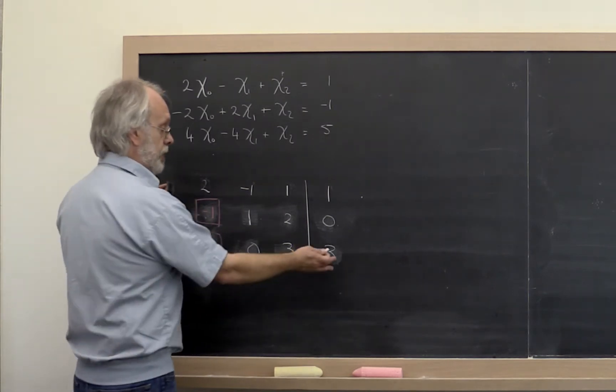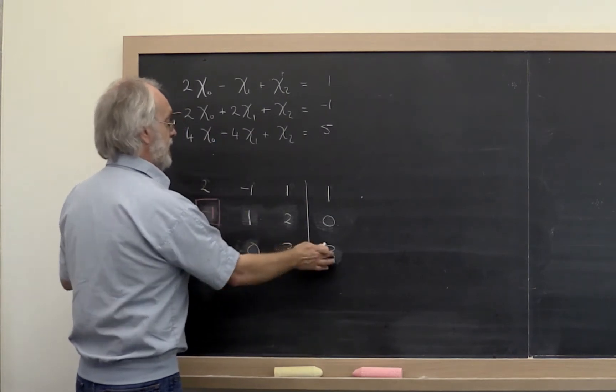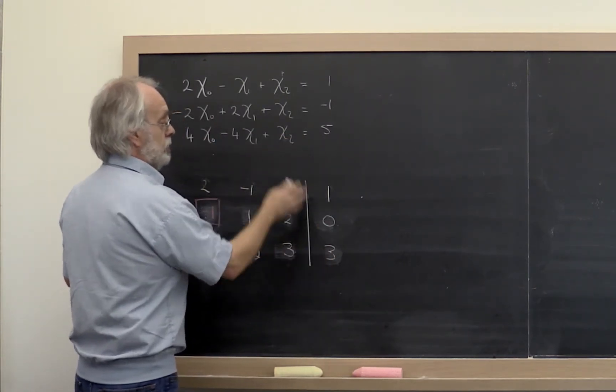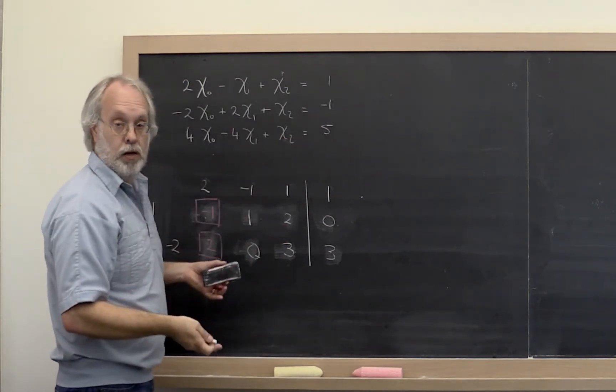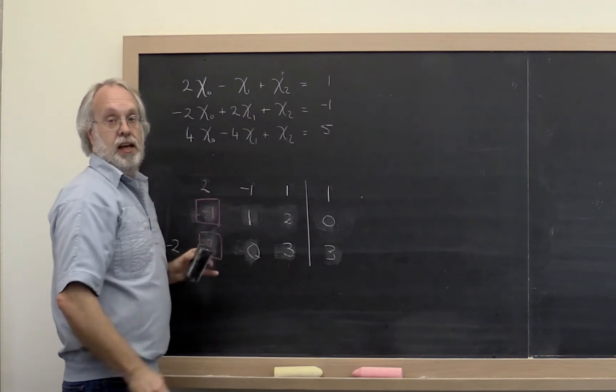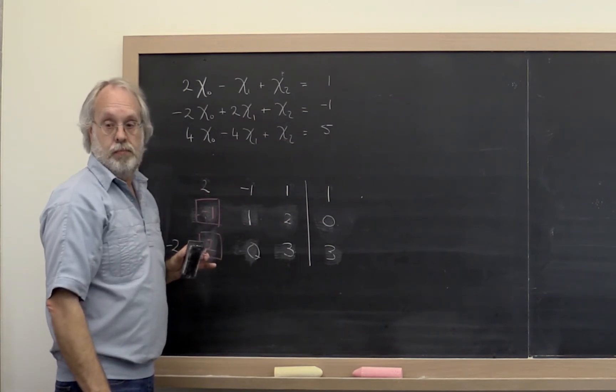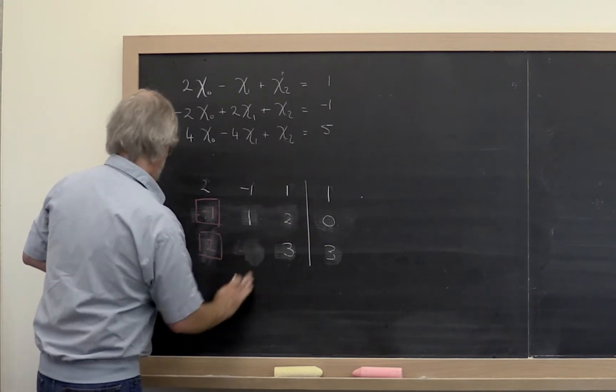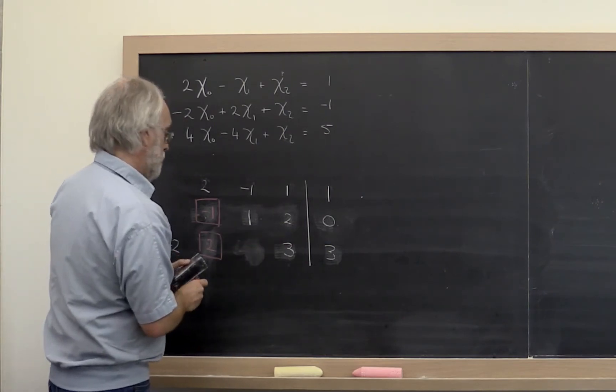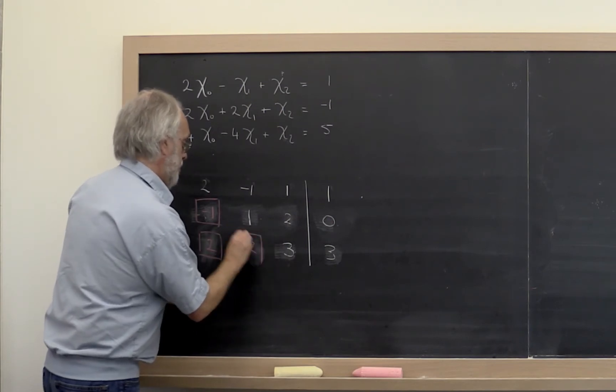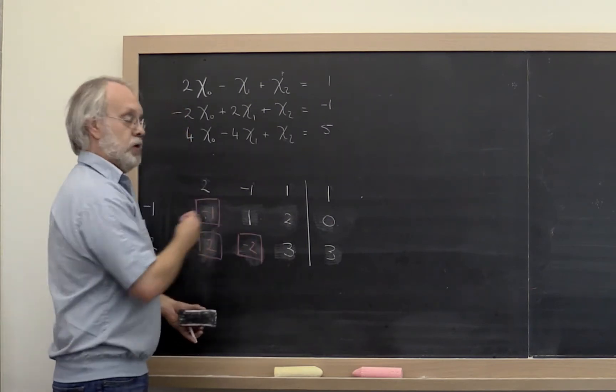Now you have an upper triangular system. Then you could remember this really stands for 3 times chi2 equals 3, so chi2 equals 1. You can plug that into the next equation and so forth. Then we store this minus 2 right there. That's what you ended up with.